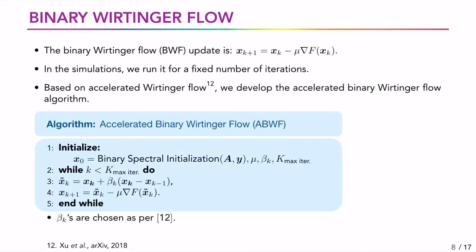The Wirtinger gradients of the cost is given at the bottom of the slide. We obtain the binary Wirtinger flow updates using Wirtinger gradients step. In the simulations we run it for a fixed number of iterations. For ideal observations without noise we can run it until 0 cost is obtained. Further, based on the recently proposed accelerated Wirtinger flow by Zhu et al., we developed the accelerated binary Wirtinger flow. The algorithm is given in this slide. It has a momentum term along with the Wirtinger gradient updates.